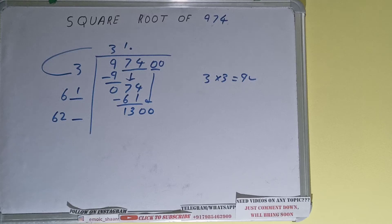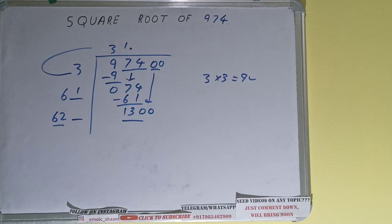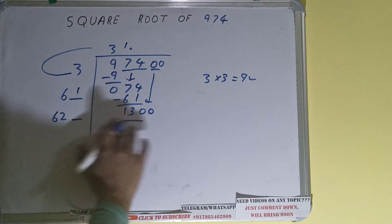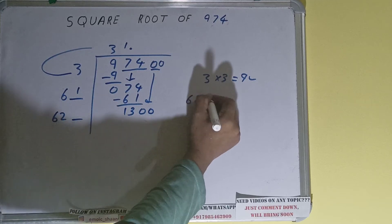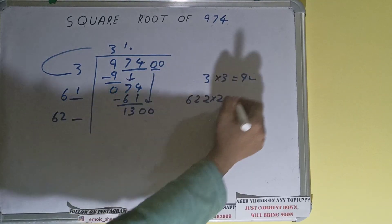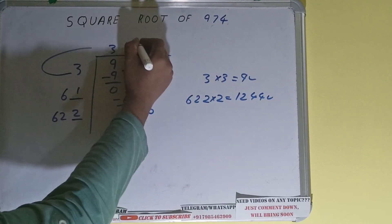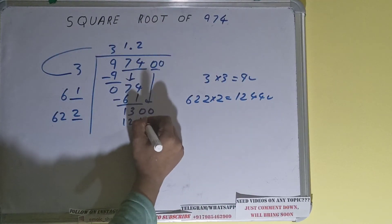Now we can try it two times because if we compare 62 and 130, 62 times 2 is 124, so that's why we can try two times. So 622 into 2 we can try, it will be 1244, which is good to take. So 2 here and 2 here, 1244, and on subtracting 56 will be left.